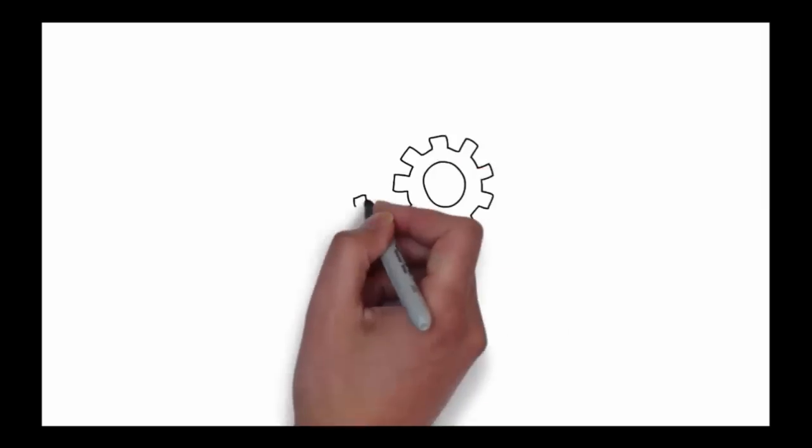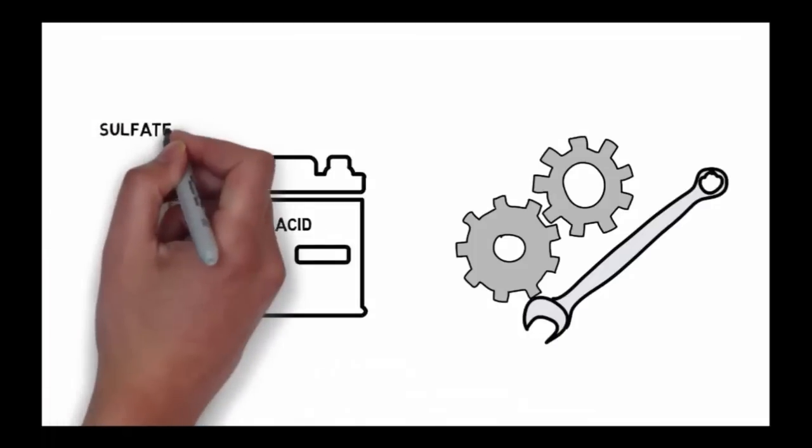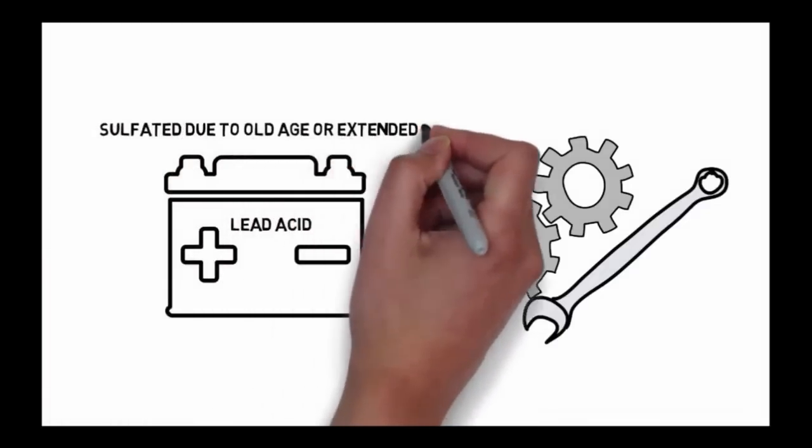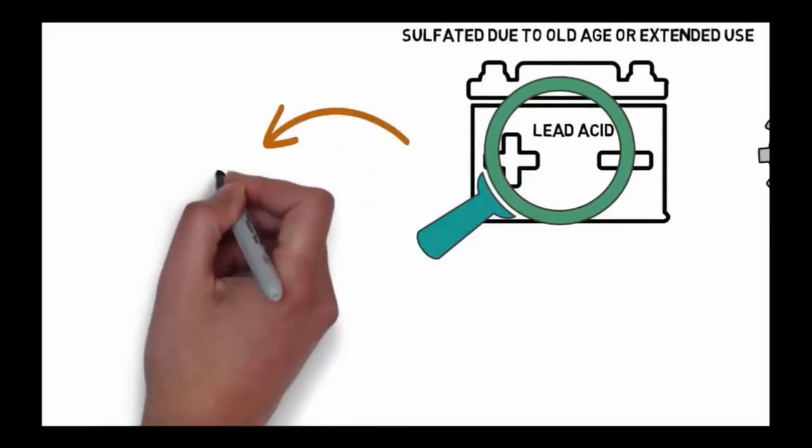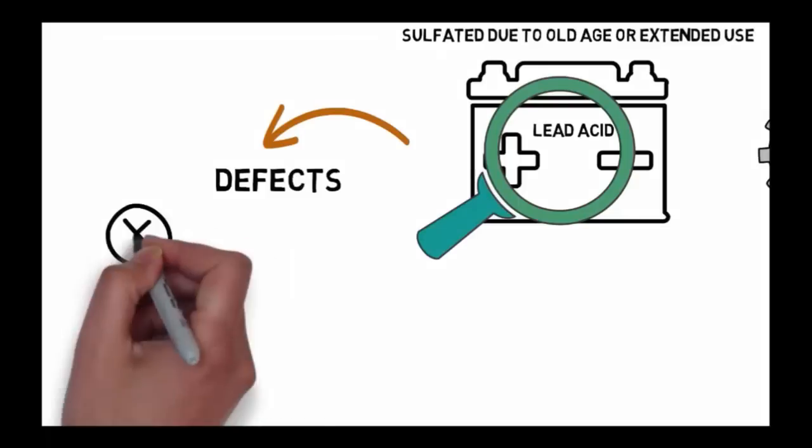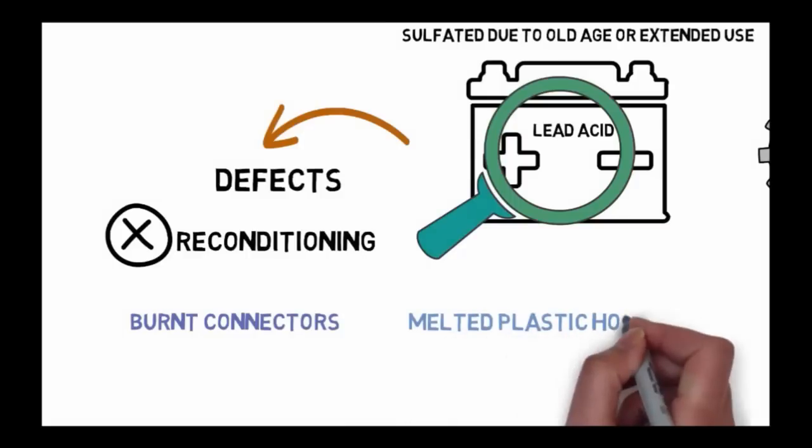The first thing to do in the process of reconditioning your lead acid type battery that has sulfated due to old age or extended use would be an inspection of physical deformities or defects. These defects could hinder you from reconditioning your battery. They could be burnt connectors or melted plastic housing.